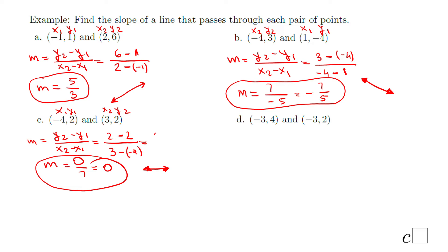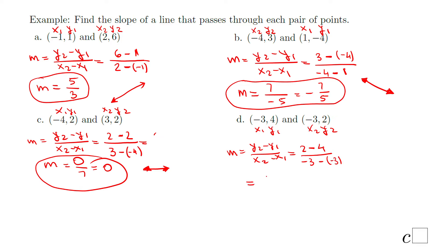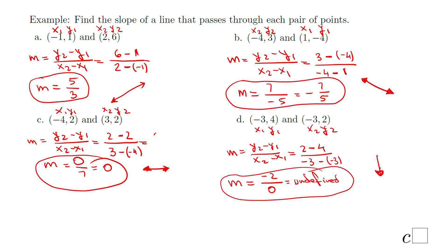For the last part of this example, labeling x1, y1 and x2, y2 and using the slope formula, we get y2 minus y1 = 2 minus 4 = negative 2, and x2 minus x1 = negative 3 minus negative 3 = 0. So we have negative 2 over 0. Be careful — this is not 0, this is what we call undefined; you cannot divide by 0. If you plot these two points, you get a vertical line, and the slope of a vertical line is undefined.